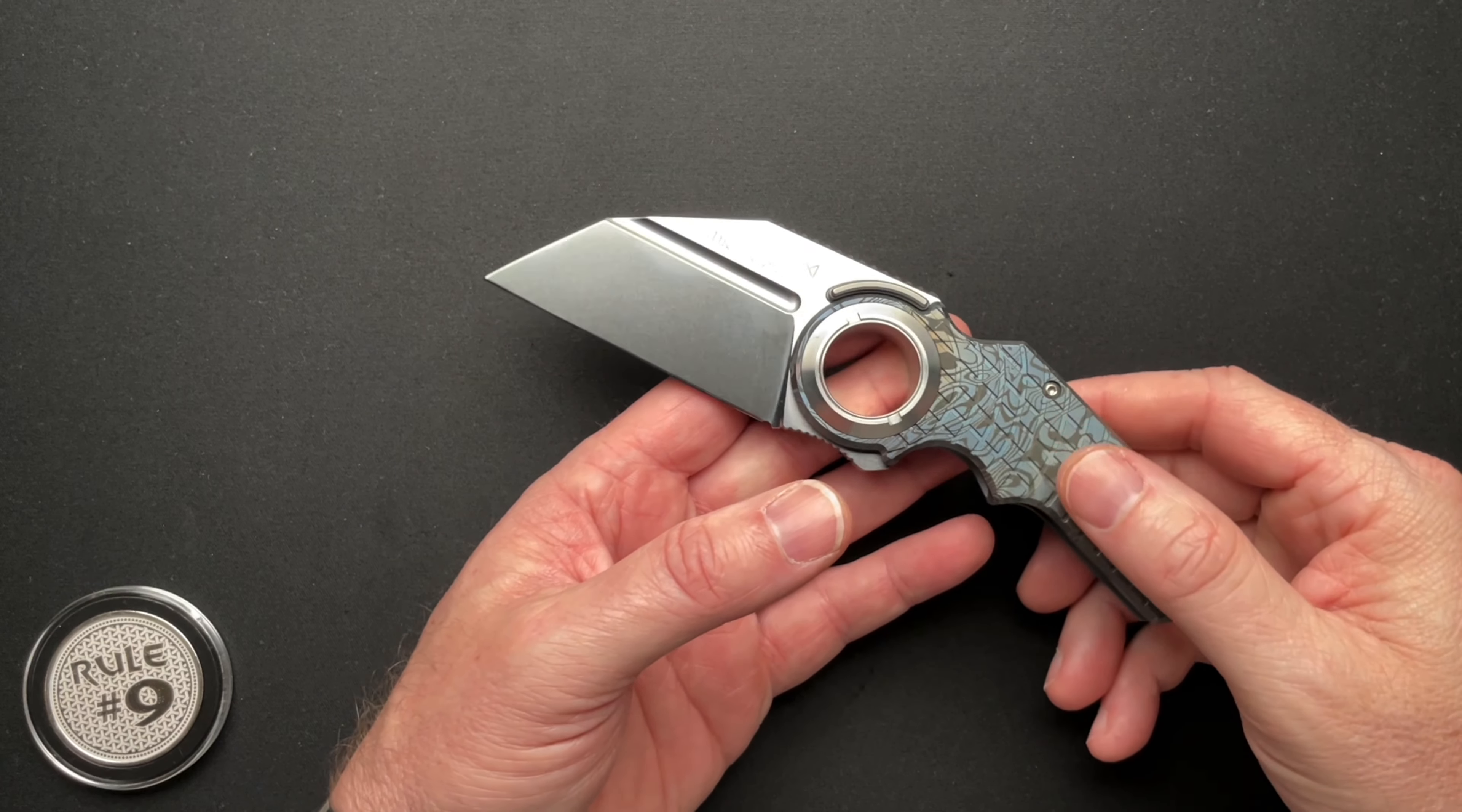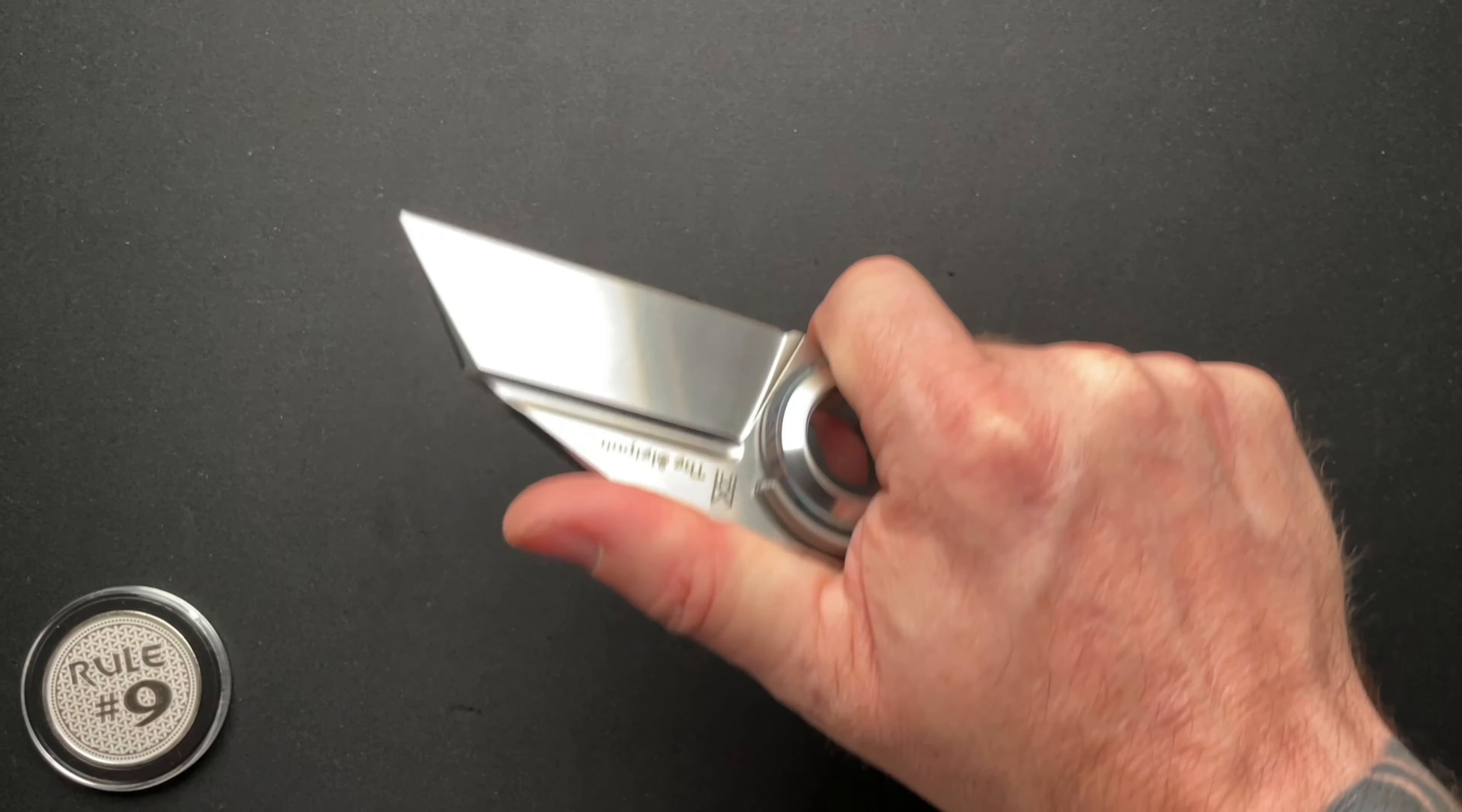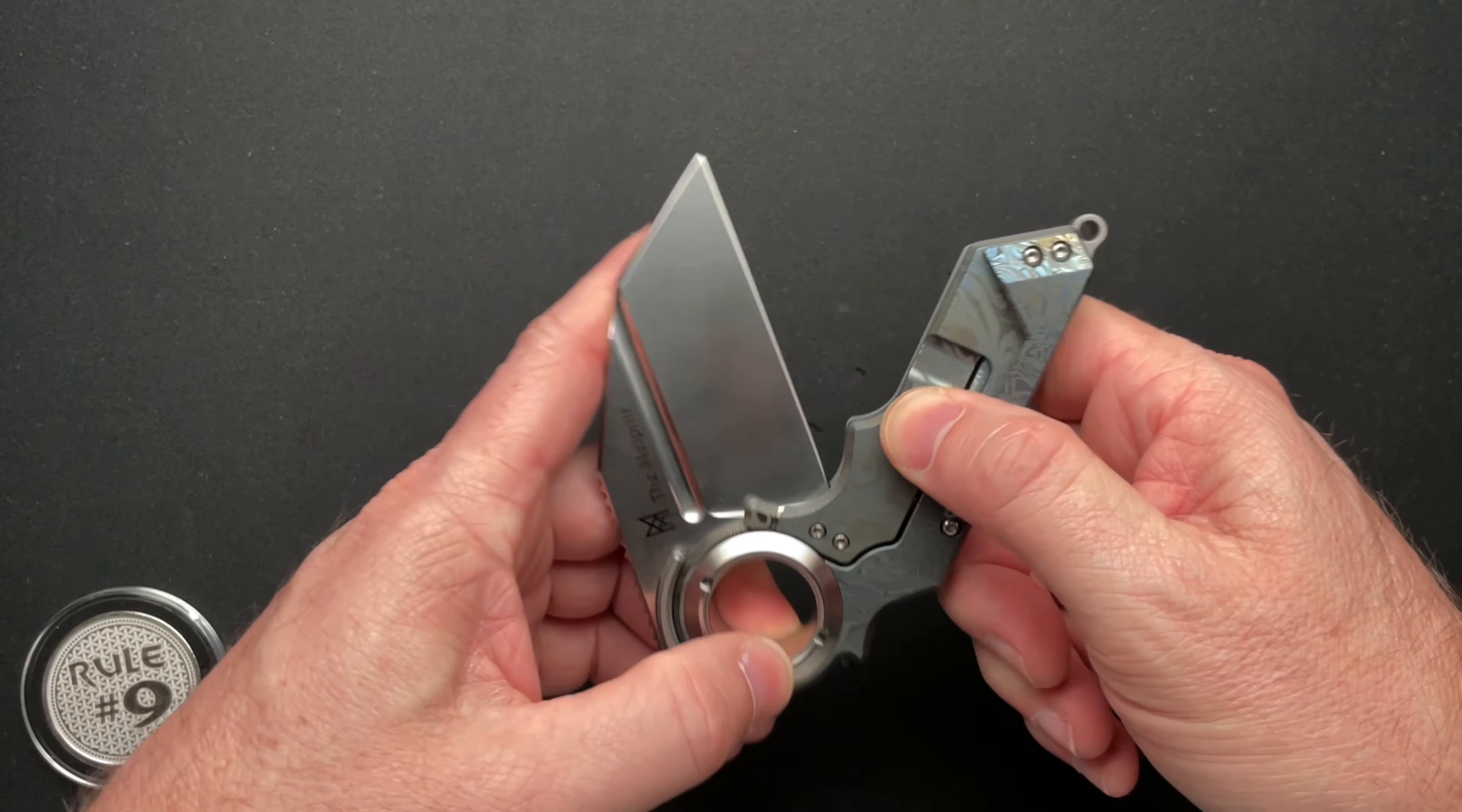But you know, it's not Dirk's world. Overall thickness is 0.590. So this is a big boy. Weighs in at 7.9 ounces and it runs on phosphor bronze washers, which is okay because it is a two-handed knife.